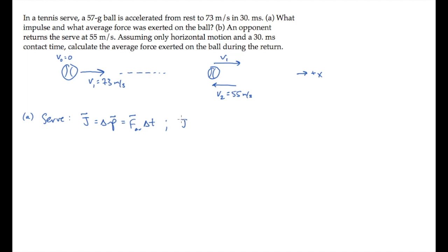We'll find the impulse as the change in momentum during the serve, final minus initial, so that's p1 minus p0. Substitute mass times velocity for each of those terms.